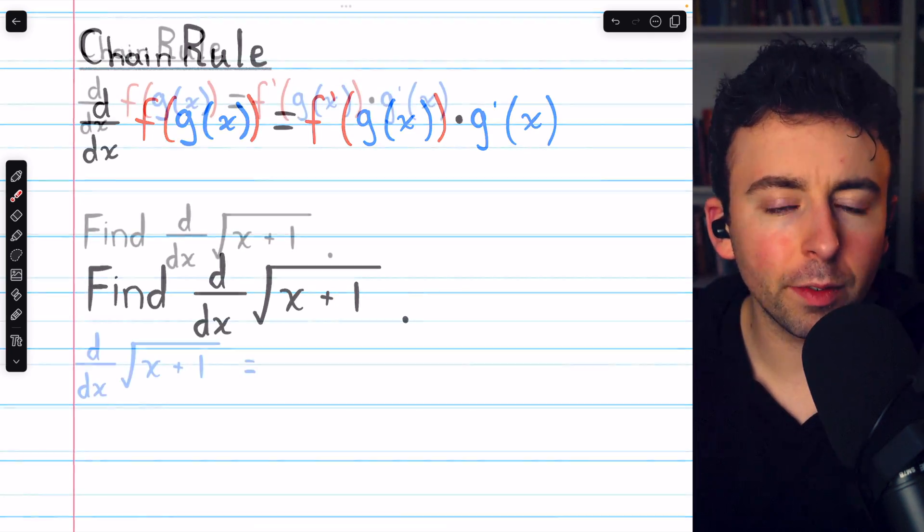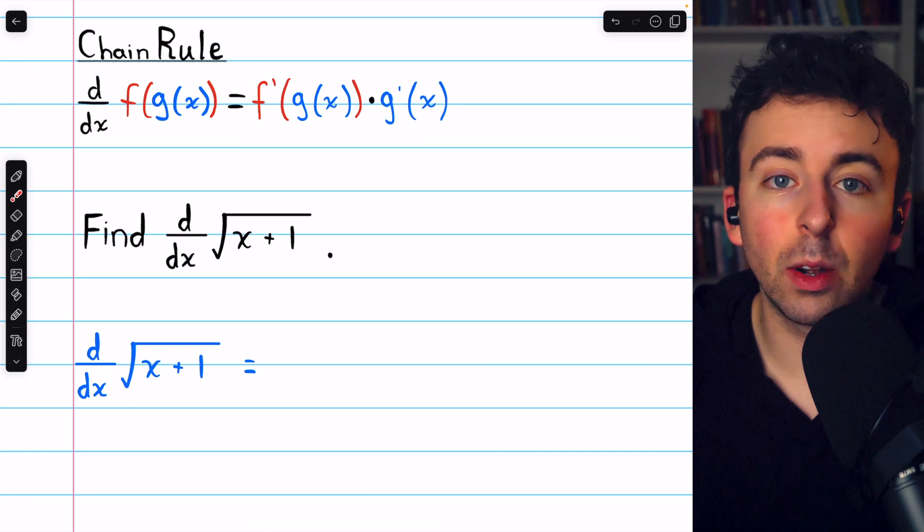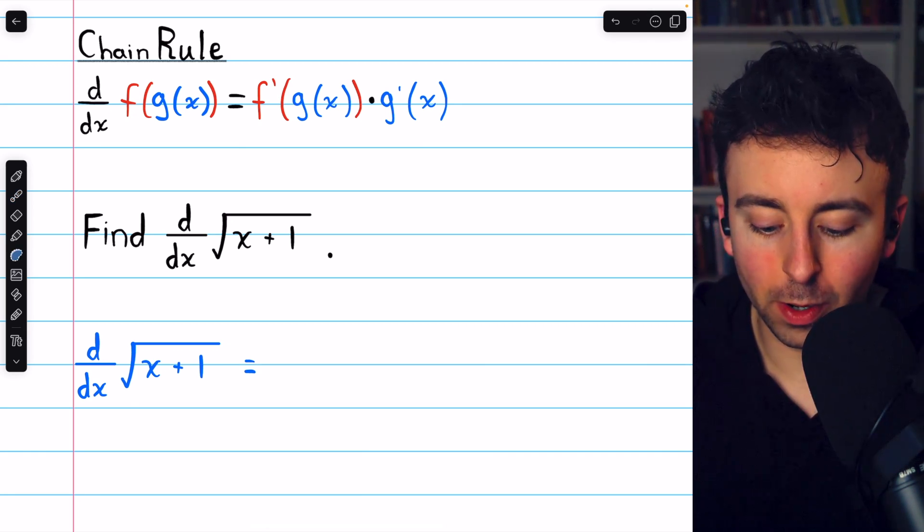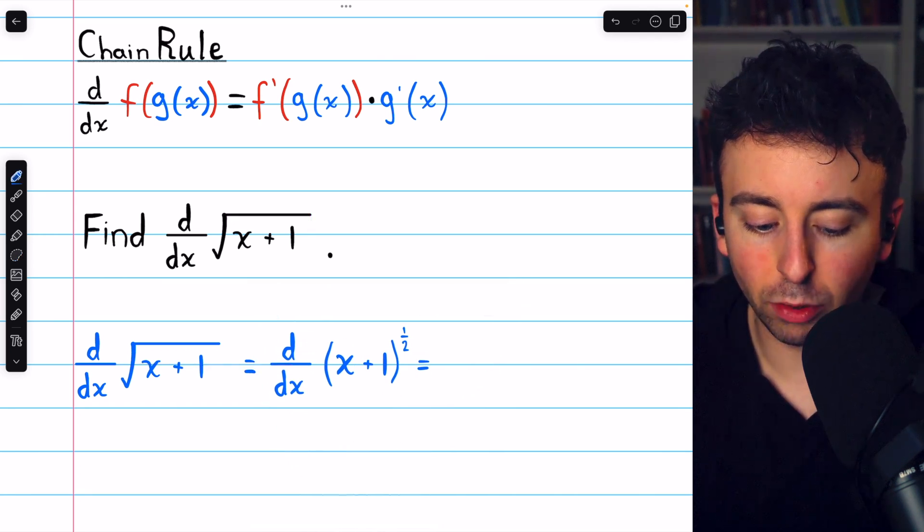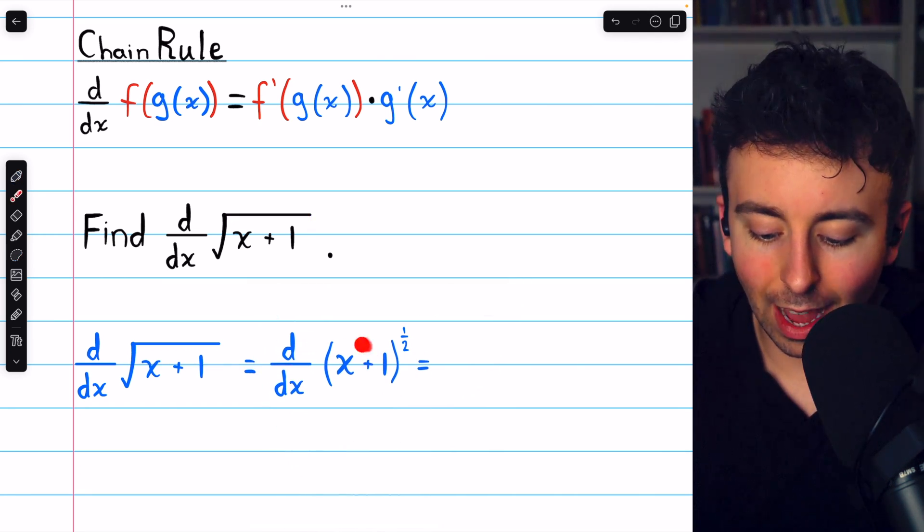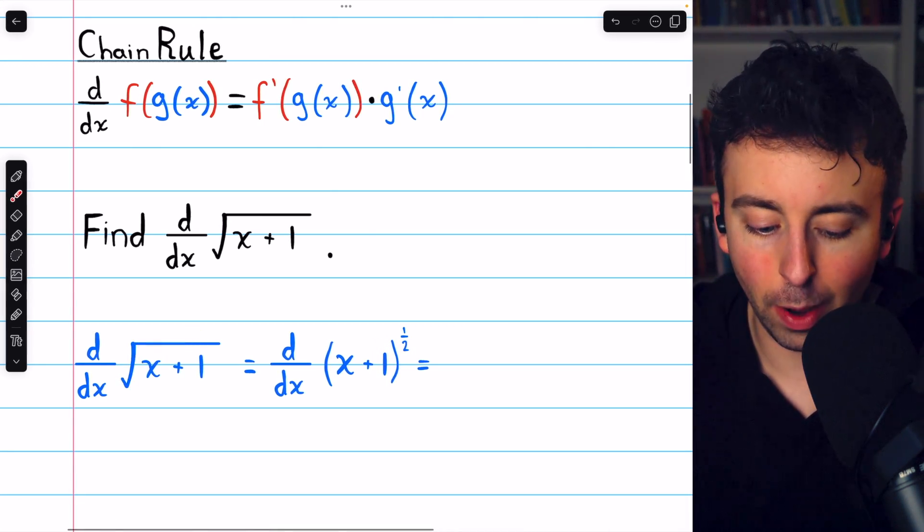Let's take the derivative. You should recall that radicals can be written as powers, and when it comes to taking derivatives, we much prefer to write them as powers. So the first thing we should do is rewrite the square root of x plus 1 as x plus 1 to the power of 1 half. That's the same as a square root.